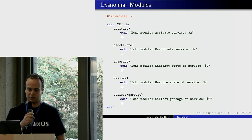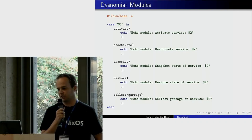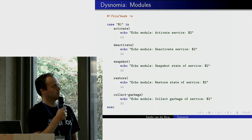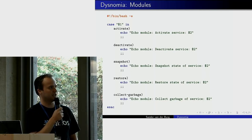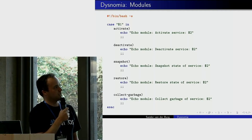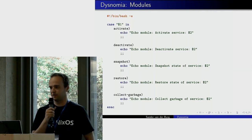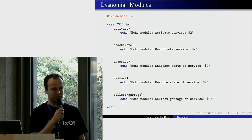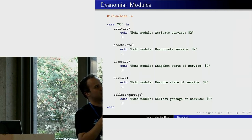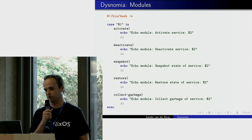Here is an example of the echo module, which is basically used for debugging. You check the first parameter — the activity you want to carry out — and in the body you specify all the shell commands you want to run. For deploying a MySQL database, you typically use the MySQL command line tool to create the database and execute the DDL instructions.